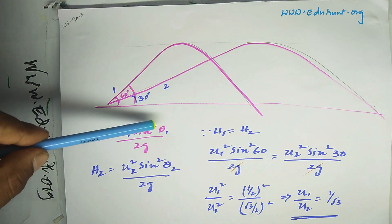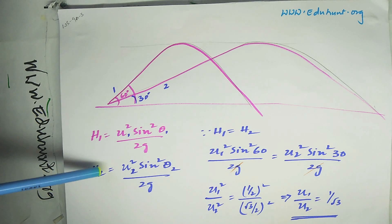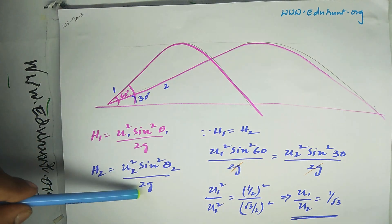h1 equals how much? u1 squared sine squared theta 1 by 2g. h2 equals u2 squared sine squared theta 2 by 2g.